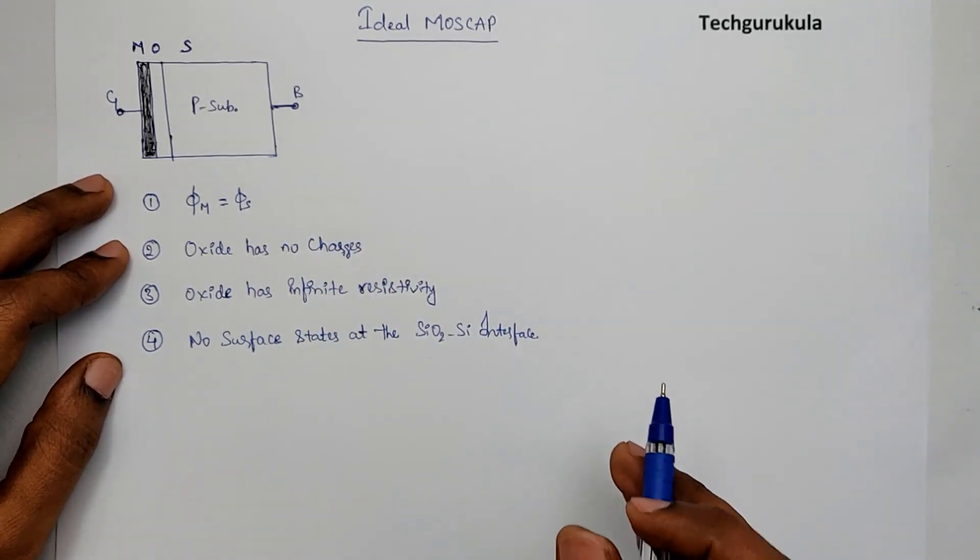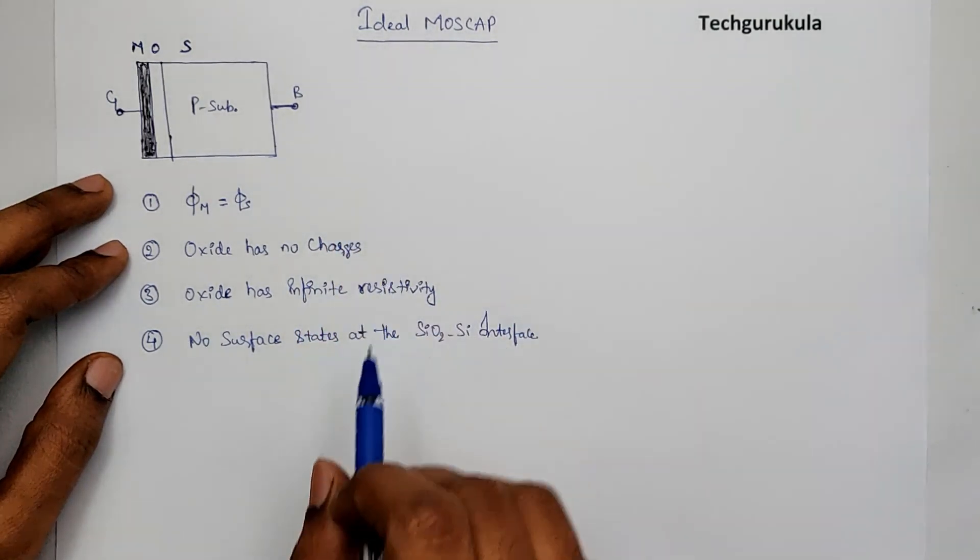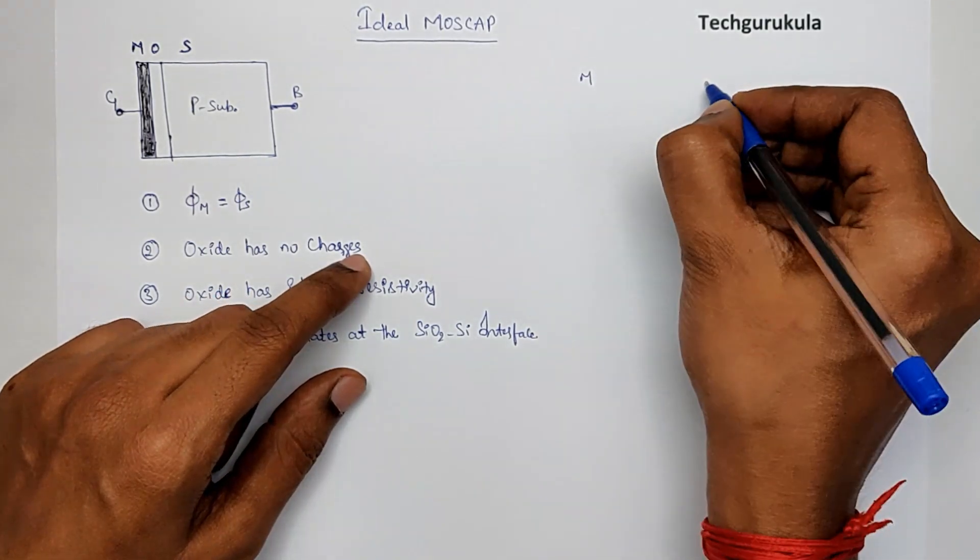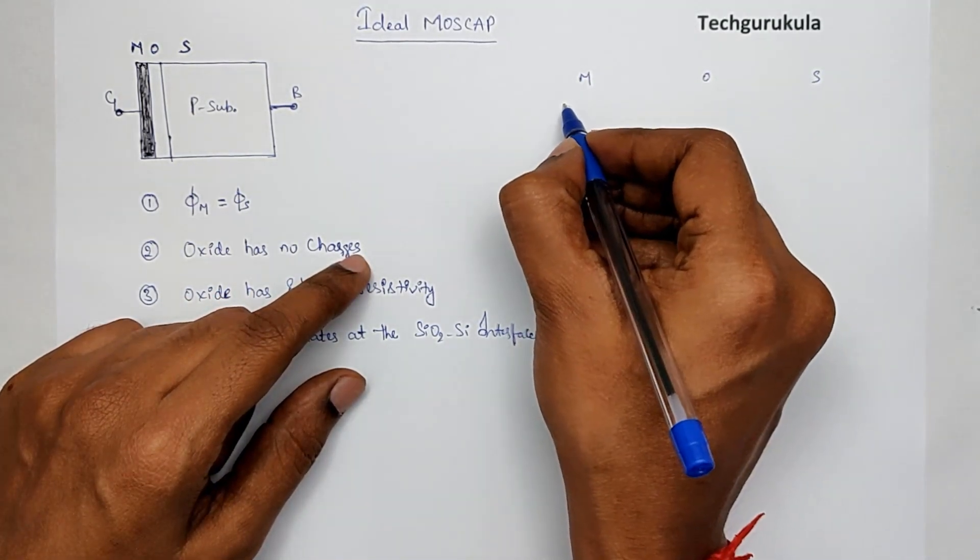Now, let's look at how is the energy band diagram for an ideal MOSCAP. So, let me see at metal oxide and semiconductor.